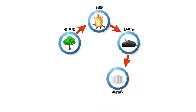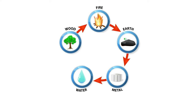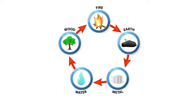Metal mines are buried in the earth — thus earth generates metal. Metal can be melted into liquid — thus metal generates water. Water is a fundamental ingredient for life and is used for irrigation to grow plants — thus water generates wood.